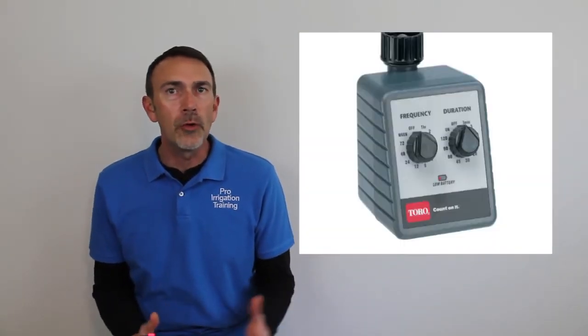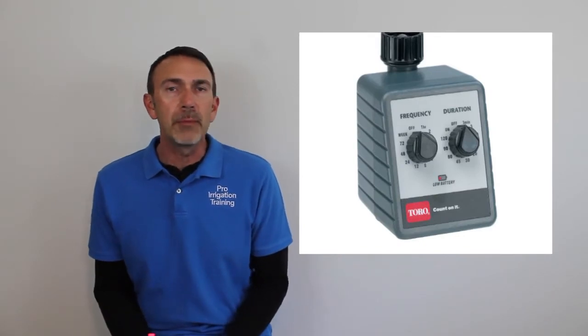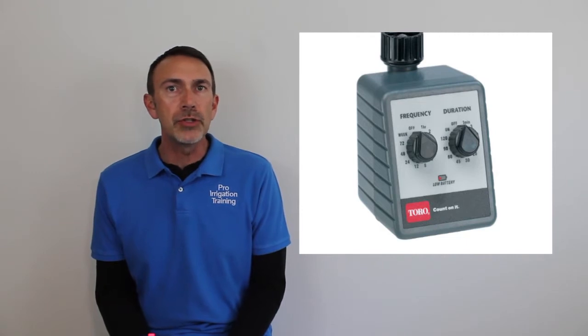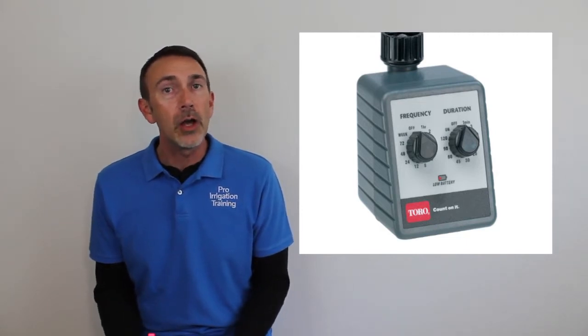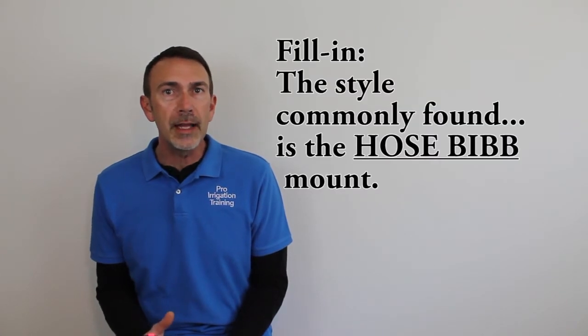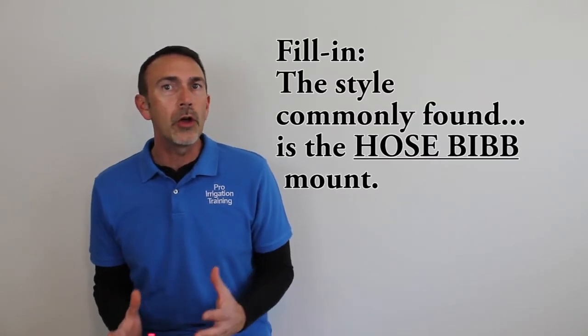The first one I want to talk about is the kind that's commonly found in the big box gardening stores, in the sections in Lowe's or Home Depot. These are made by a number of different manufacturers, and it's the type that mounts to an external faucet, also called a hose bib. These use garden hose threads to attach to it and also to come from it.